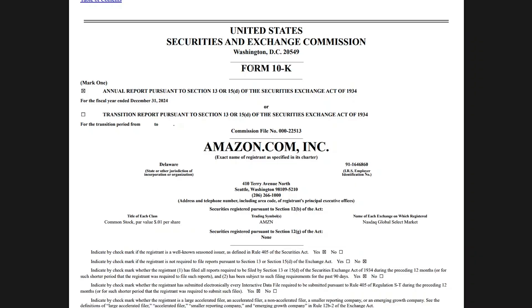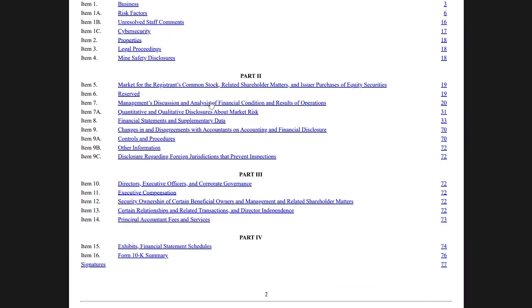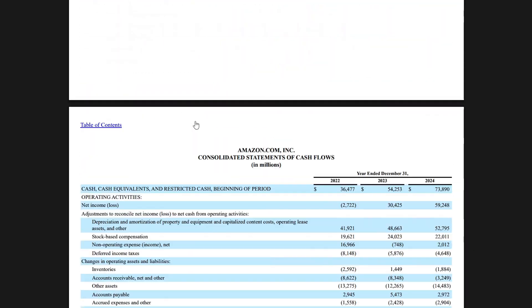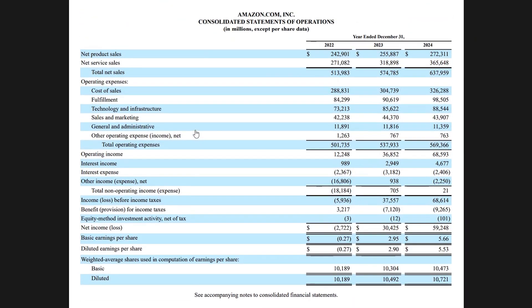To find Amazon's actual income statement, you want to go to a form called a 10-K. You can just look up Amazon Form 10-K, and from the table of contents, scroll to the section called financial statements and supplementary data. Within it, scroll lower to find the three main financial statements. Right now we're looking at the consolidated statement of operations, which is the same thing as the income statement.